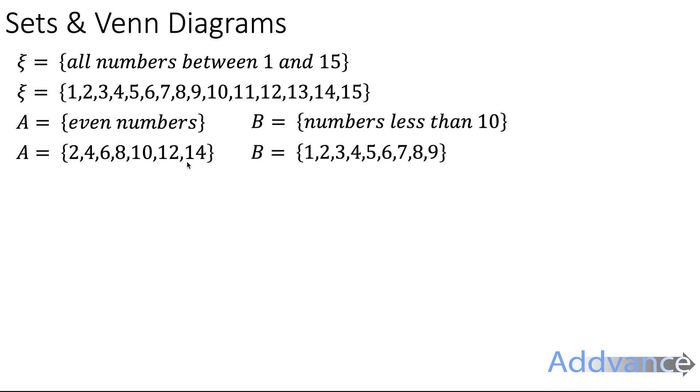So we can write the three sets out like this. We write out the universal set, all numbers between 1 and 15. The set of even numbers: 2, 4, 6, 8, 10, 12, 14. We stop at 14 because if we went any further, 16 would be outside of the universal set. And set B, the numbers 1 to 9. Always a good idea to write out the full sets when you've got an exam question like this.